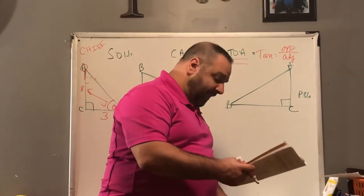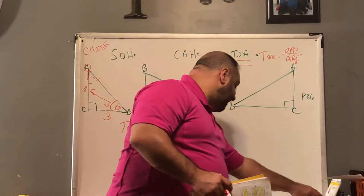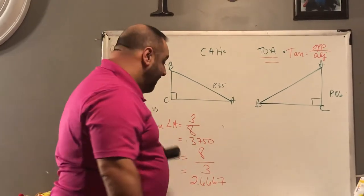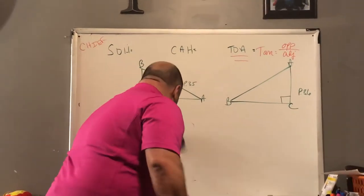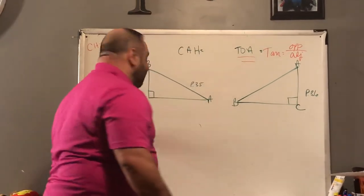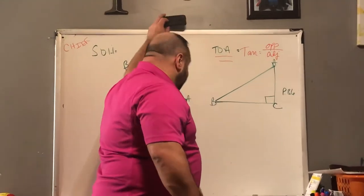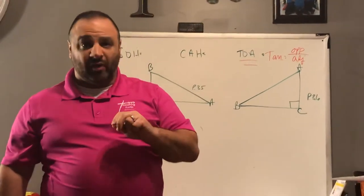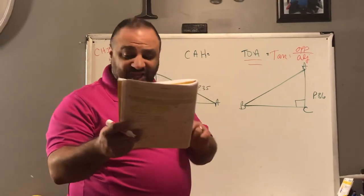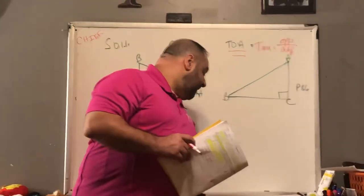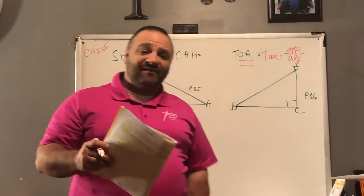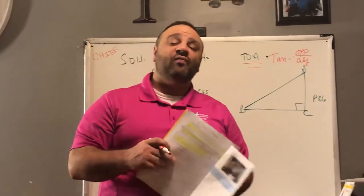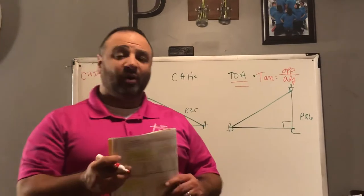For number 4, the tangent of angle A is 2.0000 and the tangent of angle B is 0.5000. For number 6, the tangent of angle A is 0.9545 and the tangent of angle B is 1.0476.